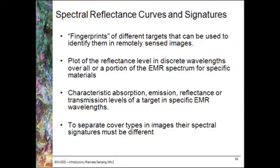Throughout the semester we'll talk a significant amount about spectral reflectance curves or spectral signatures. We see these as essentially fingerprints of different targets that can be used to identify them in remotely sensed images. So we might have a spectral signature curve of vegetation, for example. It is a slight misnomer in that one would think a signature is unique to a particular feature, whereas because we're talking about environmental features there's always natural variability, so it's not 100% unique and we'll always see variations.